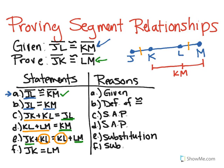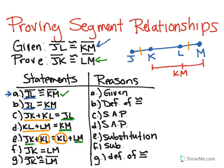We're almost there because right now I have those two segments equal to each other, but I need them to be congruent. From the first part of this proof, we know that if two segments are equal to each other, then by the definition of congruence they are also congruent. So there we go — we have proved what we wanted to. And that's going to conclude this tutorial.